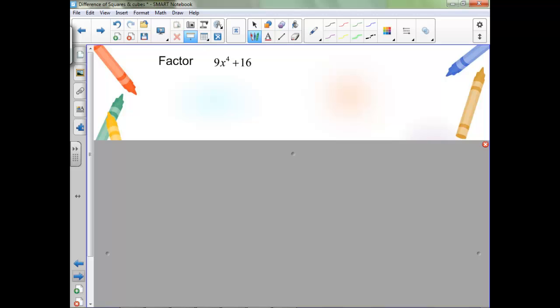Now let's try the same thing with this. So we need to multiply to 144 and add to 0. Well 12 and 12 are our options, which would get us to 0 if they were opposites, but they don't. Nothing else is going to add to 0, so this one is prime.